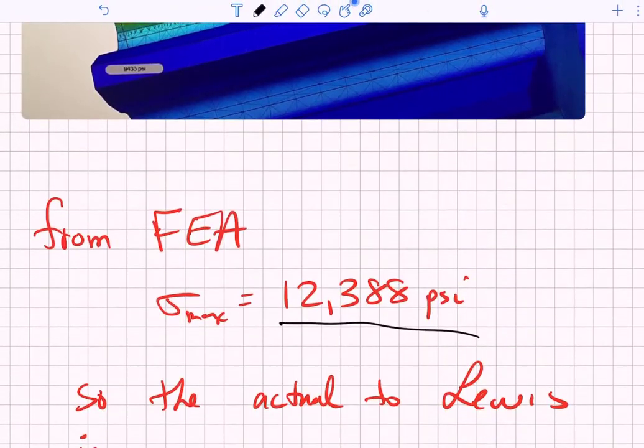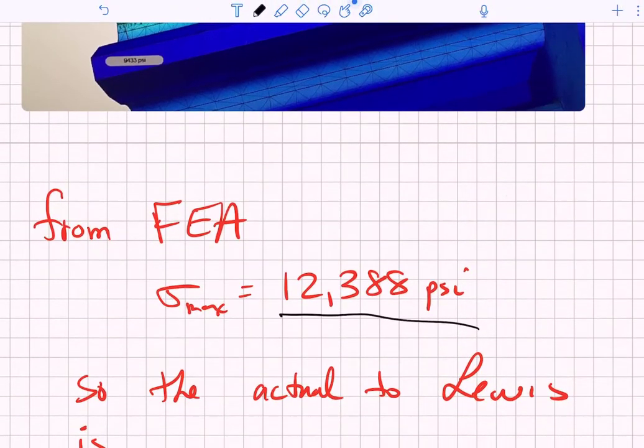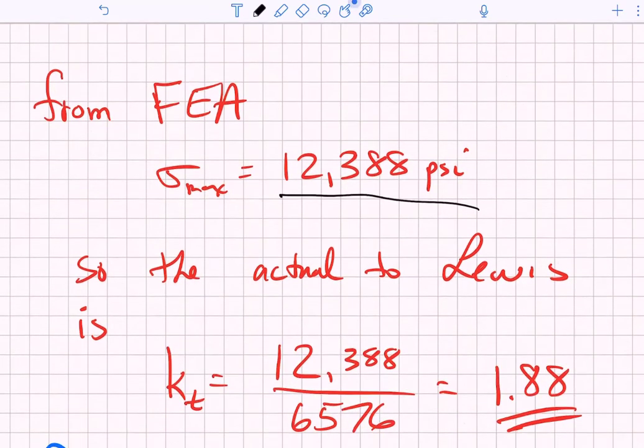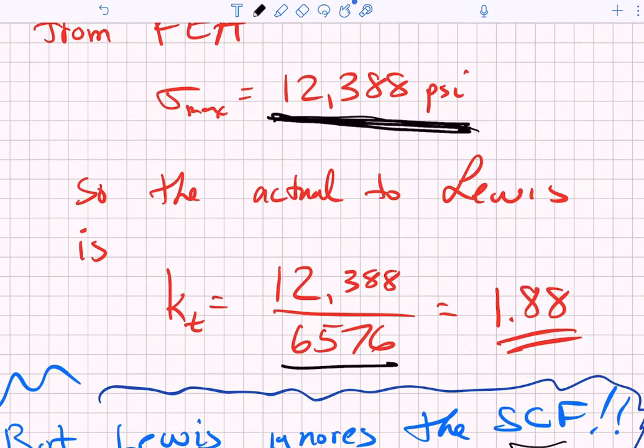Well remember we have completely ignored the stress concentration factor. So if I take my maximum root stress from the FEA and I compare it to my Lewis bending stress I would get a stress concentration factor of on the order of 1.88 and that is the secret here.